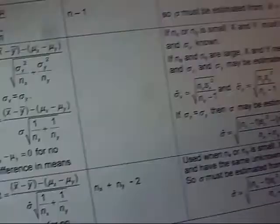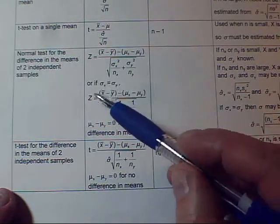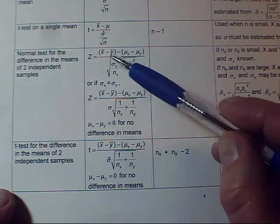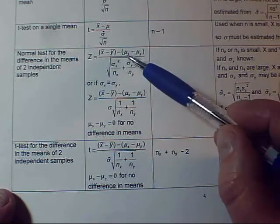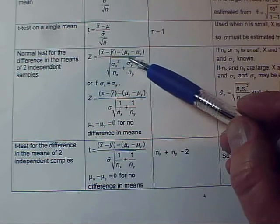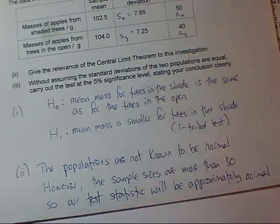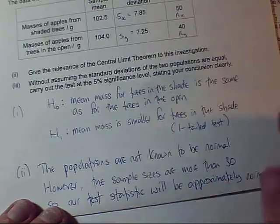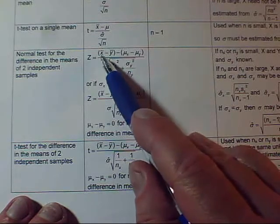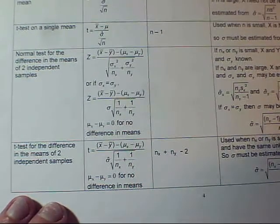The next step is the formula at the top — the second one only applies when we assume the two standard deviations are the same, which we're not doing, so it's the top one. This term here, the difference in the two mu's, are the population means. For the tests we're doing, the null hypothesis is always that the two means are the same. H₀ says the two population means are the same, so the assumed difference in the population means is always zero. I just need to do x-bar minus y-bar divided by what's on the bottom of the fraction.